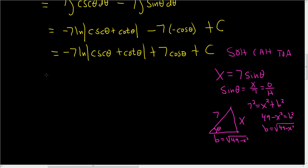So now we can go back and fill everything in and probably be done. So let's see, negative 7, natural log. So cosecant is 1 over sine. So it's hypotenuse over opposite. So 7 over x. And then we've got cotangent. That's 1 over tangent. So adjacent over opposite. So plus the square root of 49 minus x squared over x plus 7.